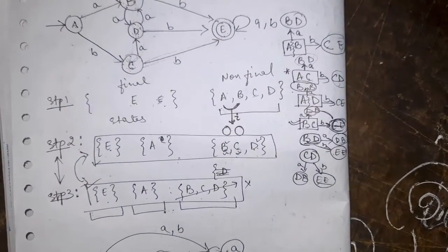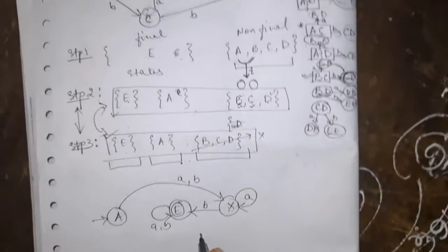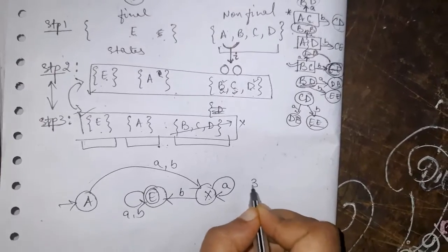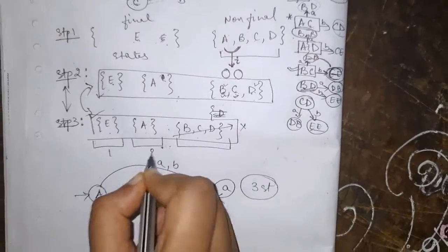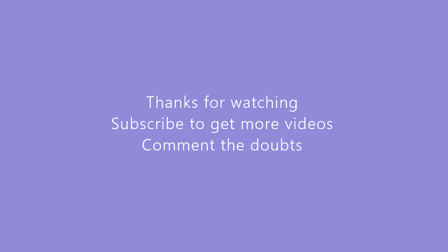Now this is the final DFA with all states having A, B, A, B and A, B. So this is the final state and it has only three states. This is the minimal DFA.